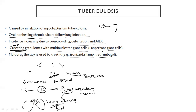When the infection spreads and cavitates itself, it comes under the secondary type of tuberculosis. In miliary tuberculosis, there is a complete systemic spread. The drugs used to treat are isoniazid, rifampin, and ethambutol.